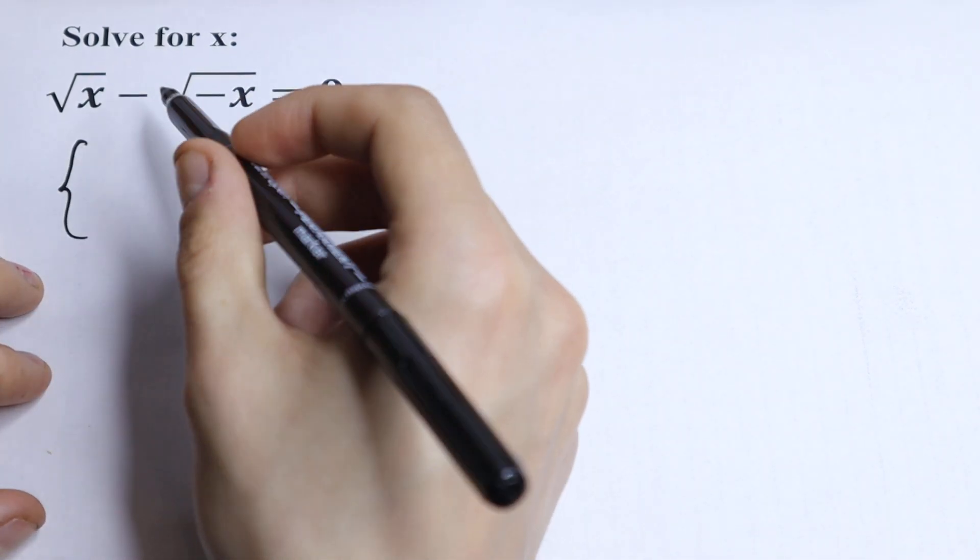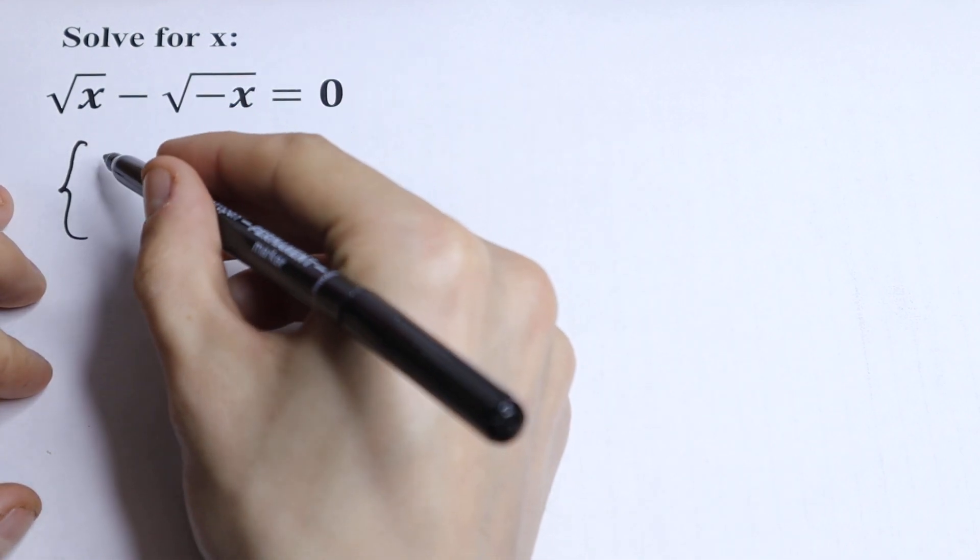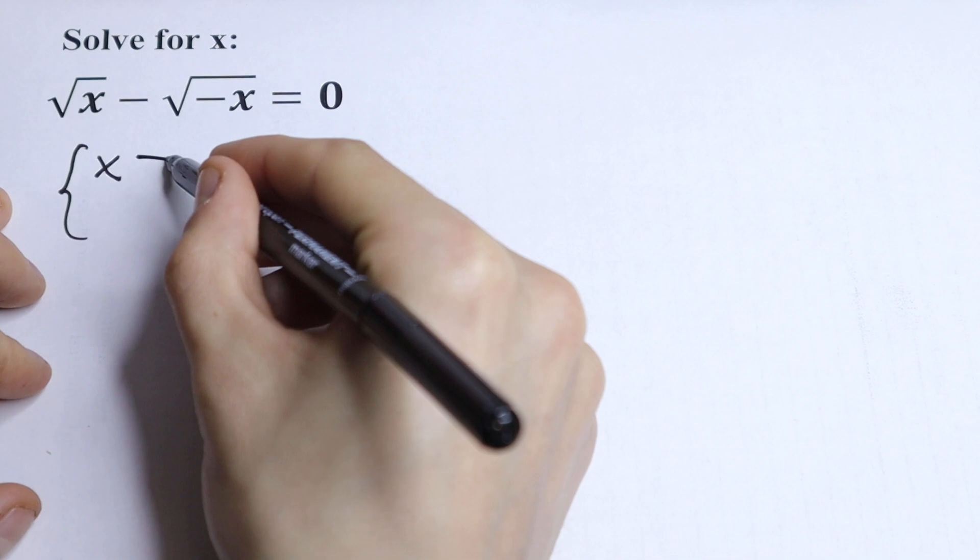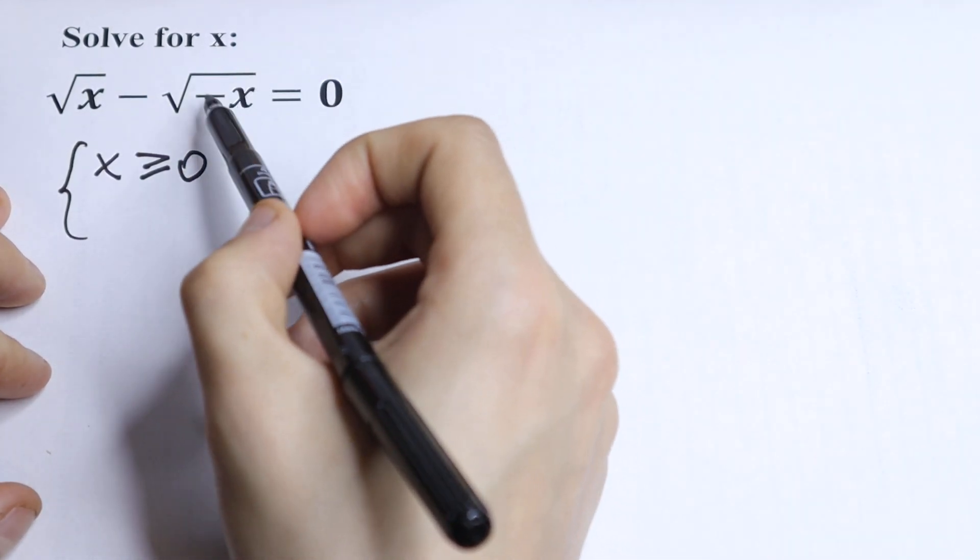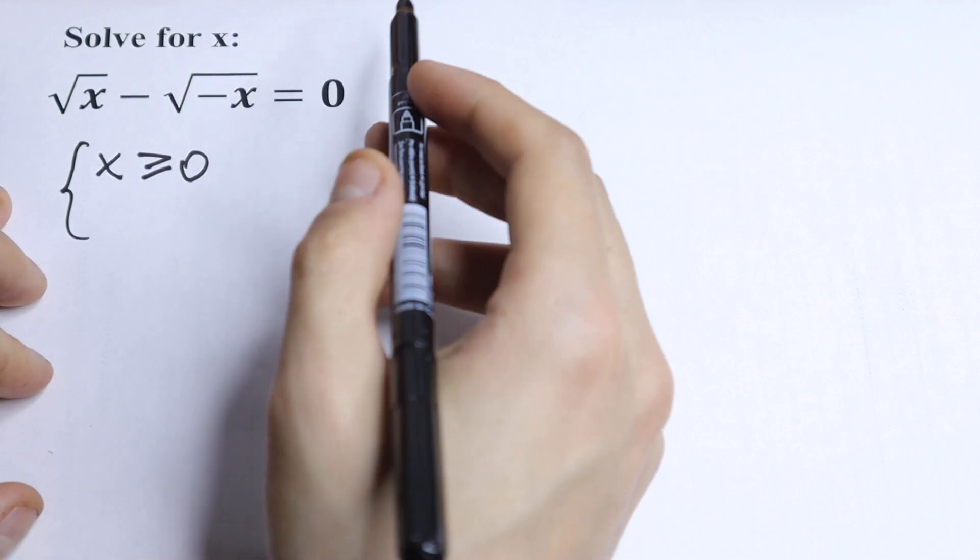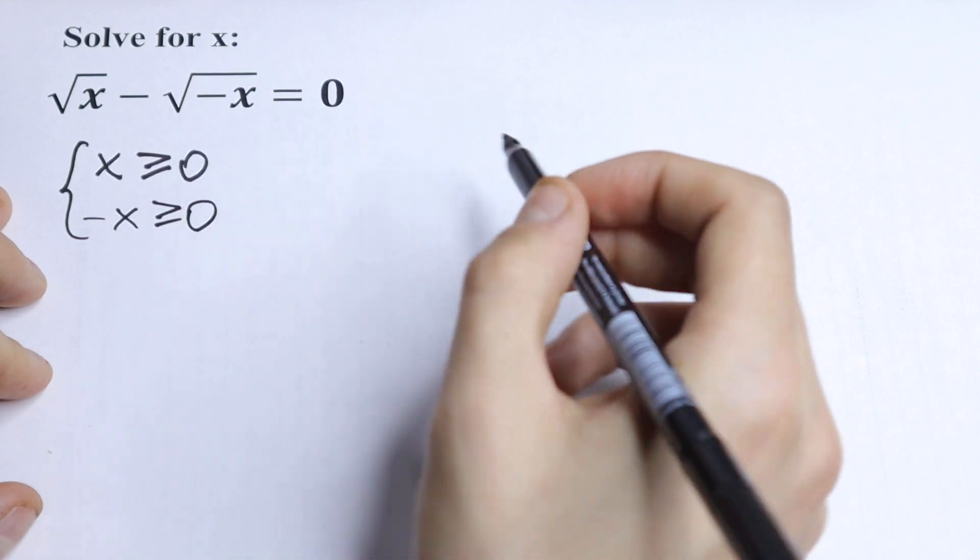Let's take a look right here. We have x inside our square root. So this x should be greater or equal to 0. And this in the same way should be greater or equal to 0. Minus x should be greater or equal to 0.